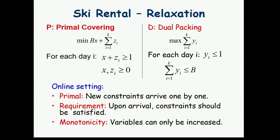Here's the dual of the primal LP. We have dual variable YI for every day. We want to maximize sigma YI. The dual constraints are: for every day, YI is at most 1, and the sum of the YI's is at most B. The primal constraints appear one by one. The algorithm is based on multiplicative updates.